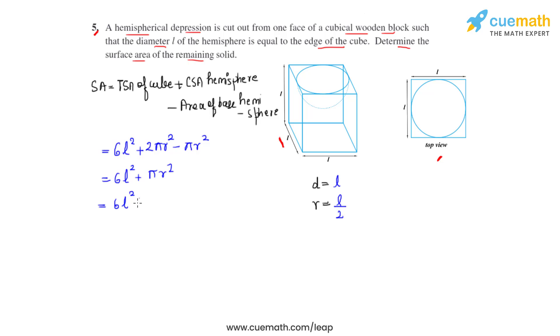Now we have already got that the radius of the hemisphere is L by 2, so let's substitute that. We get it as (L/2)², so we'll get the answer as 6L² plus πL²/4.